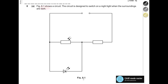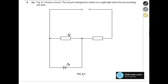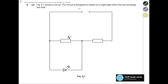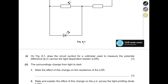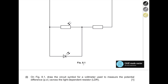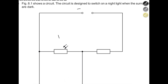Question 8, figure 8.1 shows a circuit designed to switch on a nightlight when the surroundings are dark. The circuit has a power supply, a normal resistor, an LDR (light-dependent resistor), and an LED (light-emitting diode). On figure 8.1, draw a circuit symbol for a voltmeter to measure the potential difference across the LDR. The voltmeter is always drawn in parallel — not in series — with the component.